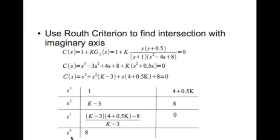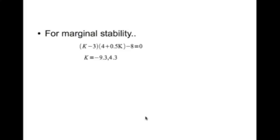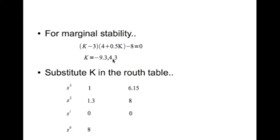We write the row for s⁰, which equals 8. For marginal stability, since the first entry is positive, all entries must be positive. Setting the s¹ row entry equal to zero and solving gives k = −9.3 or k = 4.3. Since k must be non-negative, we take k = 4.3.